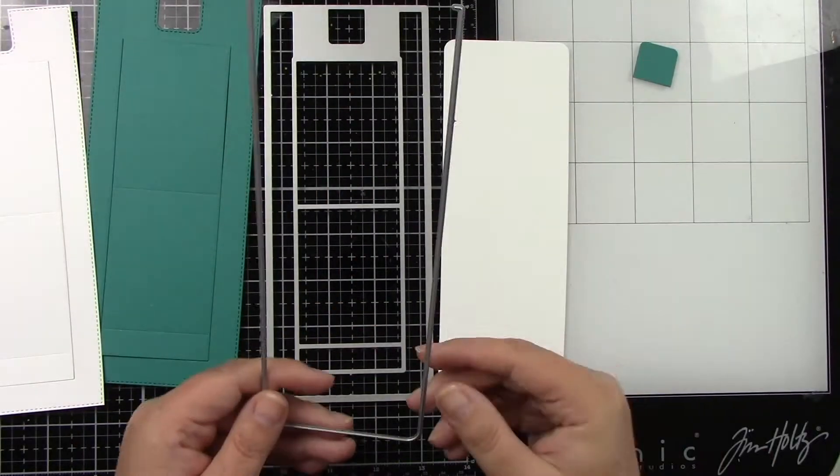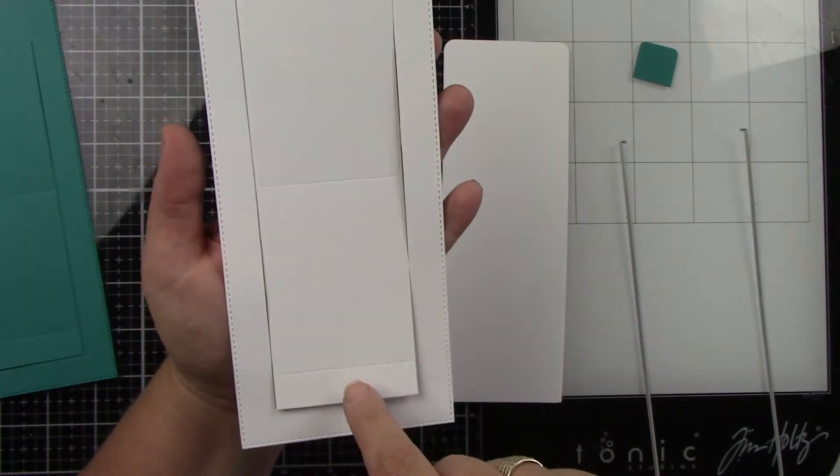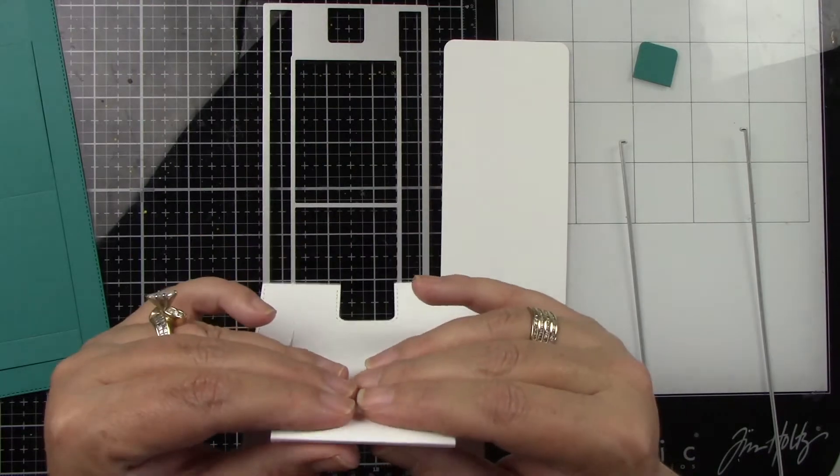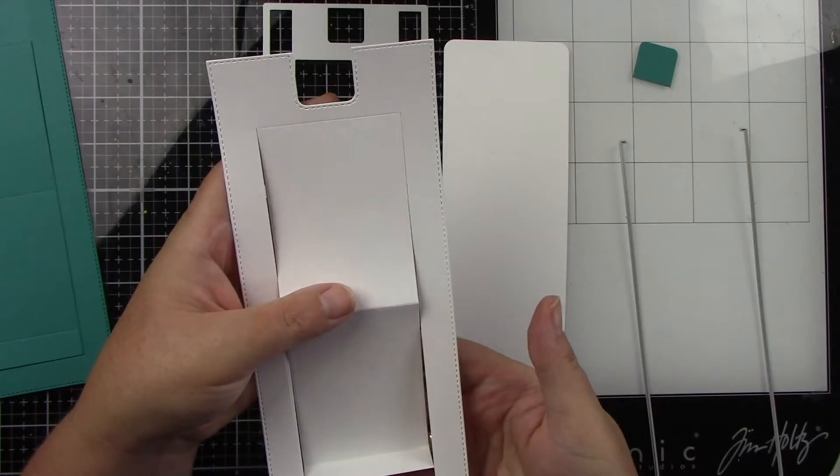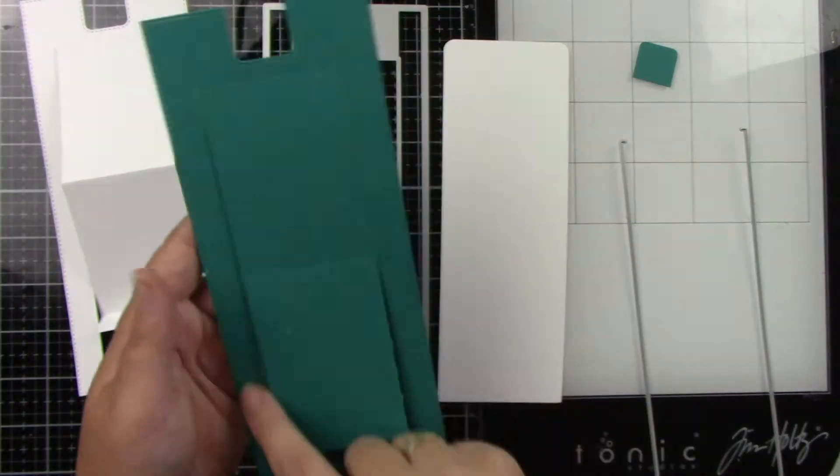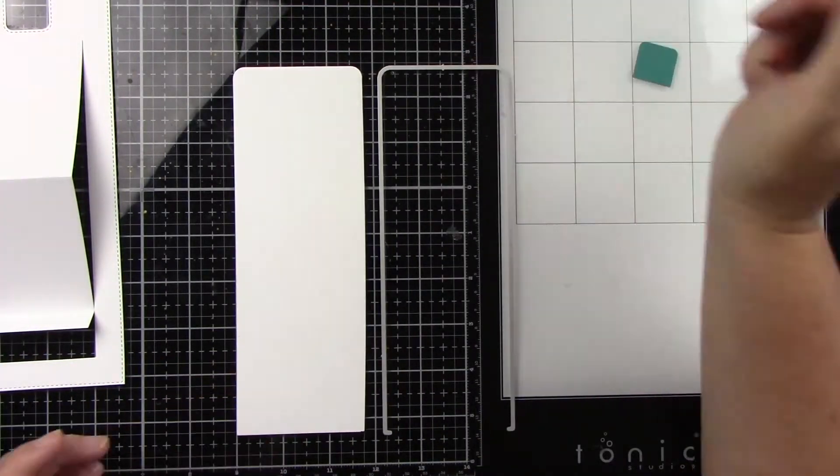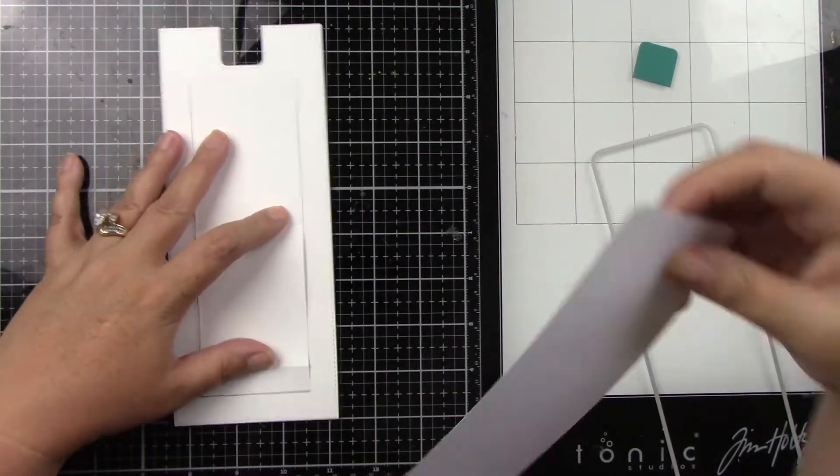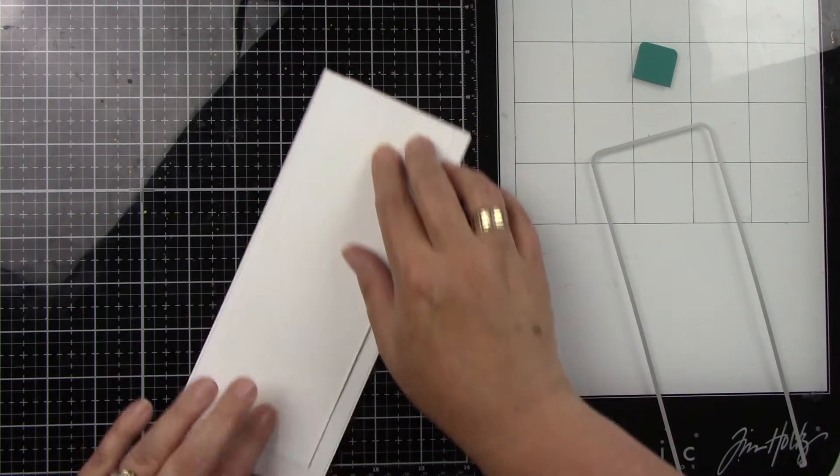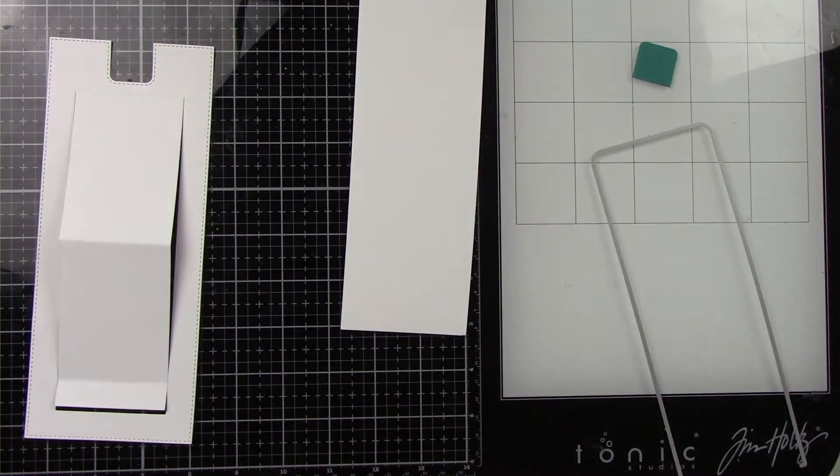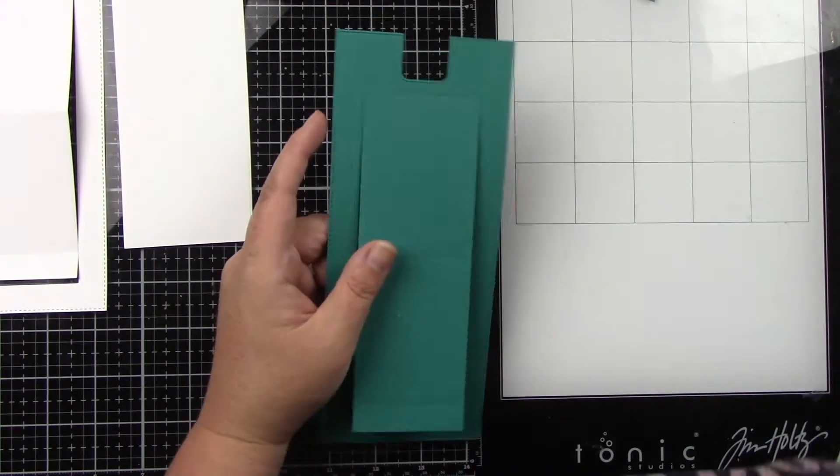Here is that pop-up die. I've die cut it twice from white cardstock and teal cardstock. I'm going to fold on these score lines. The teal is going to be for the frame, so I'm going to cut that center piece out. That back piece is going to hook behind, and this is what you're going to pull and slide this top piece up. It's really super simple to put together.